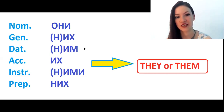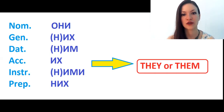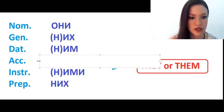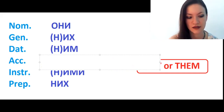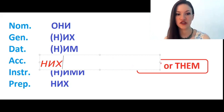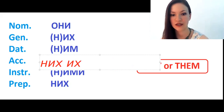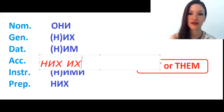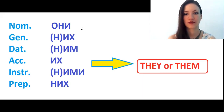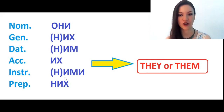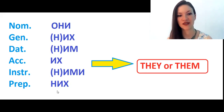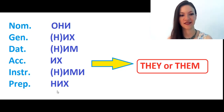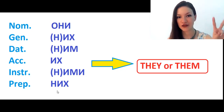Accusative: них (or их). Instrumental: ними (or ими). Prepositional: них. In English 'они' means 'they' or 'them.' So look how many forms we have in Russian — ten forms — compared to only two forms in English.